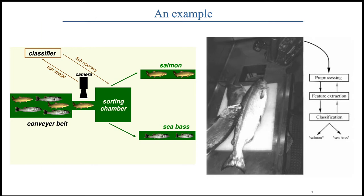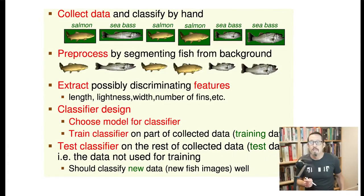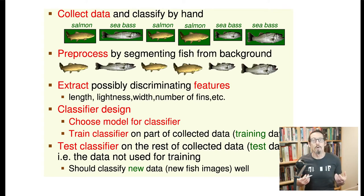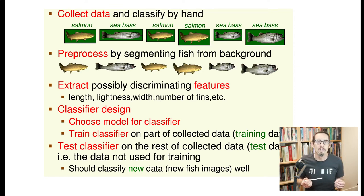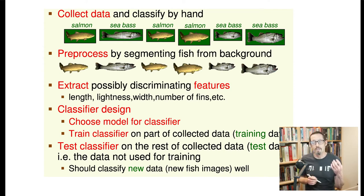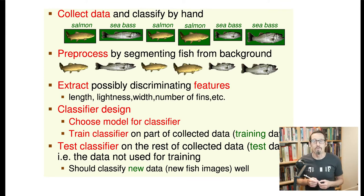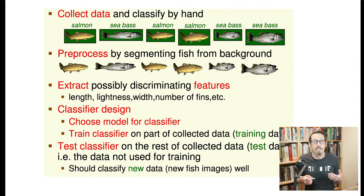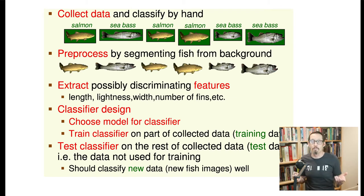How would we deal with this by hand? We're going to collect a bunch of data — fish images from operation of the machine — and pre-process them, removing the computer vision part. Some magic process draws a line around the fish, separating it from the background. We get measurable features like the length, brightness, width of the fish, number of fins, and so on. We're making a classifier: choosing a set of rules by hand to best separate sea bass and salmon.